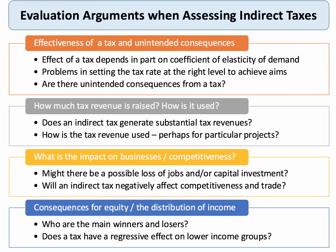Finding the optimal level of a tax is tough — often you have to see what happens and adjust. Third, are there unintended consequences? Any intervention in the market has at least one unintended side effect. Another evaluation point: how much tax revenue does the tax raise? Is it a big earner, particularly for goods with inelastic demand? And crucially — how is the tax revenue used? Does it go into the general pot, or is it allocated to a specific purpose, like the sugar tax funding sport in primary schools?